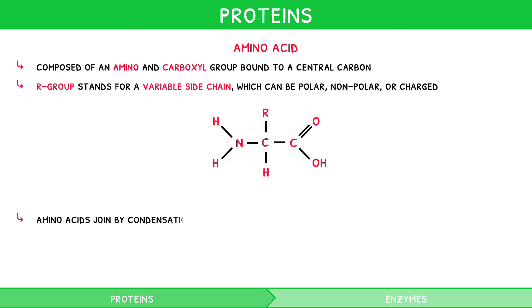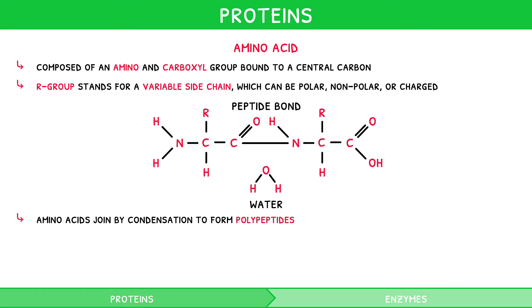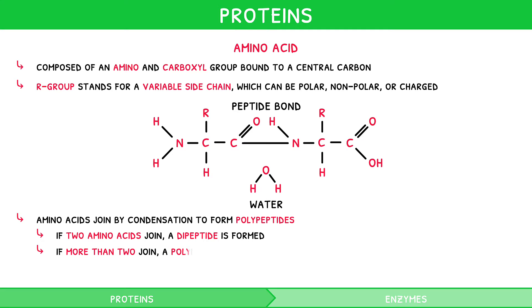Amino acids join by condensation, yet another anabolic reaction, to form polypeptides. Like with carbohydrates and lipids, you need to be comfortable drawing this process. Draw two amino acids adjacent to one another. The OH group within the carboxyl group on one amino acid joins with the hydrogen within the amine group on the adjacent amino acid. This forms a peptide bond and water. If two amino acids join in this way, a di-peptide is formed. But if more than two join, a poly-peptide is formed.